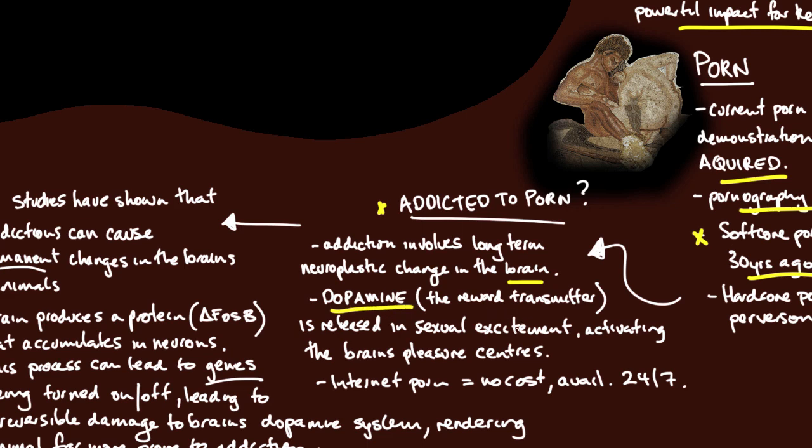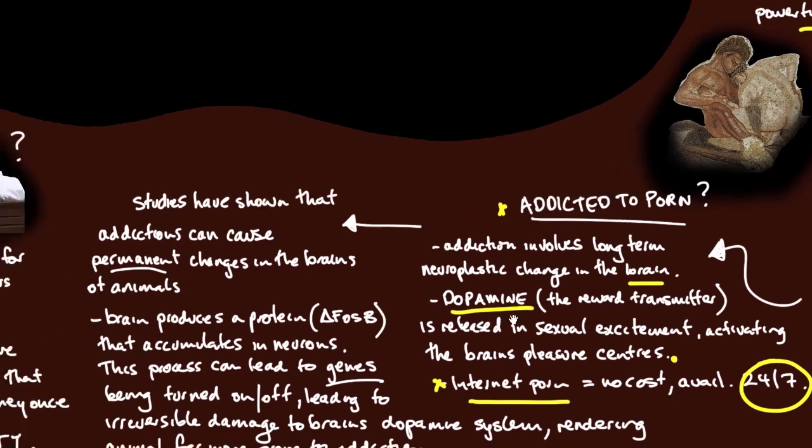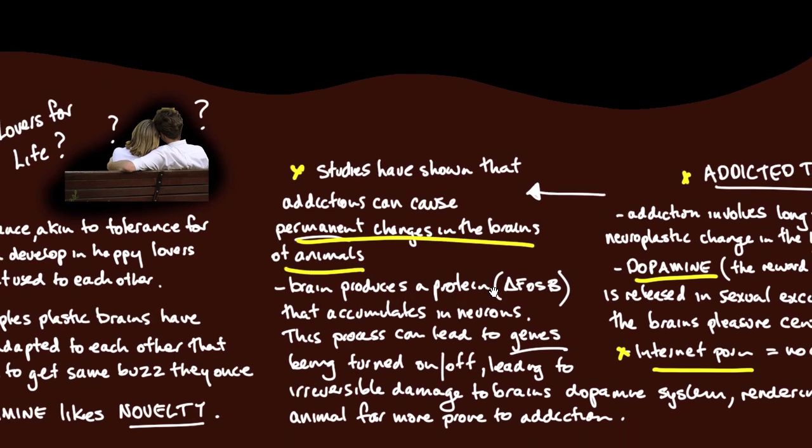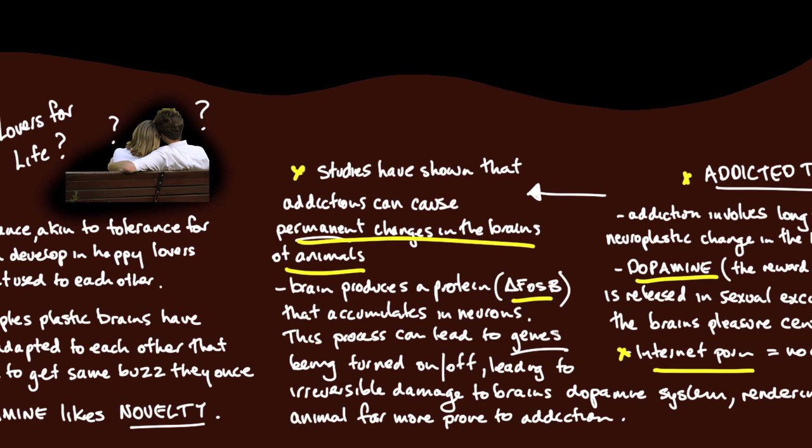Dopamine, which is a reward transmitter, is released during sexual excitement, activating the brain's pleasure centers. That's why humans keep gravitating back to that. And internet porn now with no cost or barrier to entry is available 24/7. He's seeing an epidemic of people addicted to porn. Studies have shown that addictions can cause permanent changes in the brains of animals. The brain produces a protein, I think that's Delta FOSB, that accumulates in neurons. This process can lead to genes being turned on or off, leading to irreversible damage to the brain's dopamine system, rendering animals far more prone to further addiction. This turning genes on and off is incredible.